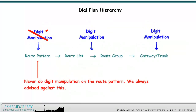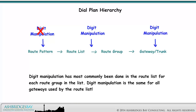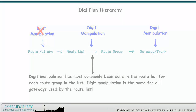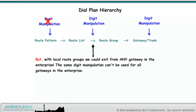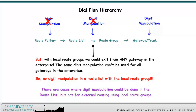Never do digit manipulation on the route pattern — we always advised against this. Digit manipulation has most commonly been done in the route list for each route group, where it is the same for all gateways used by that route list. But with local route groups, we could exit from any gateway in the enterprise, so the same digit manipulation can't be used for all gateways. Therefore, no digit manipulation in a route list with the local route group. There are cases where digit manipulation could be done in the route list, but not for external routing using local route groups.